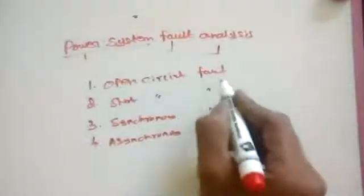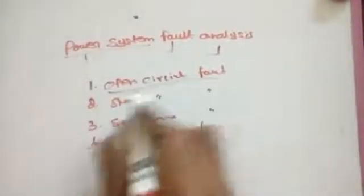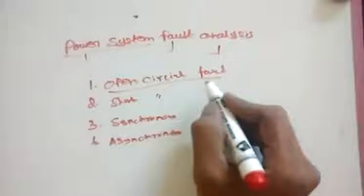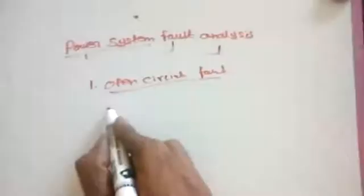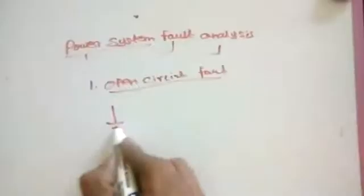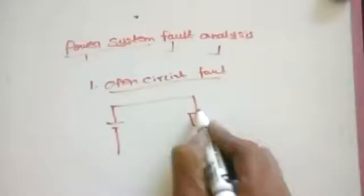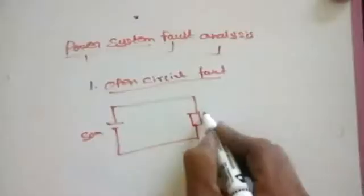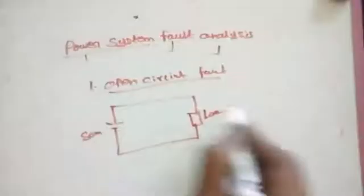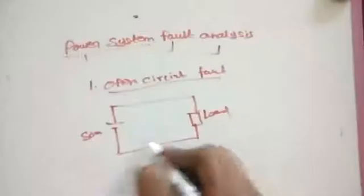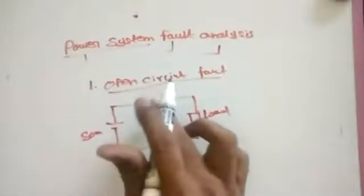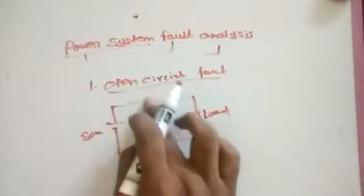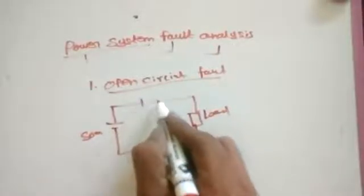The first one is open circuit fault. In an open circuit fault, a circuit is generally a closed loop — it includes a source, a load, and connecting conductors. If for some reason one of those conductors becomes open, that is an open circuit fault.